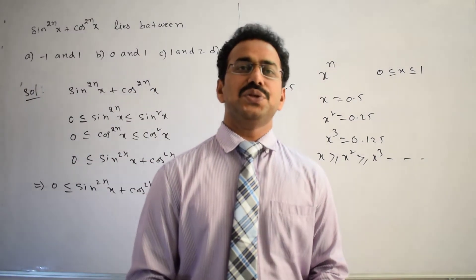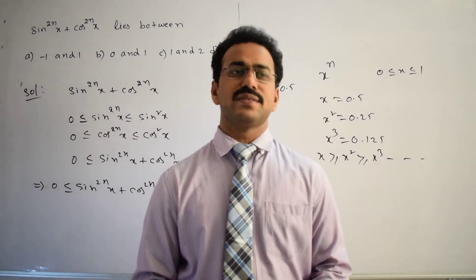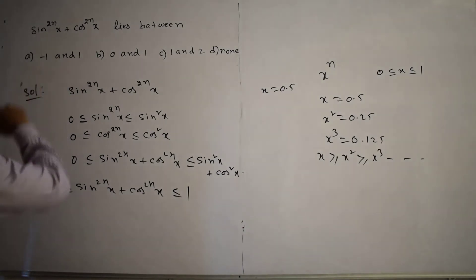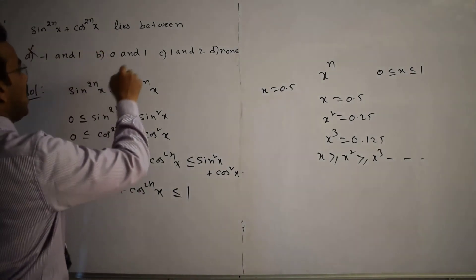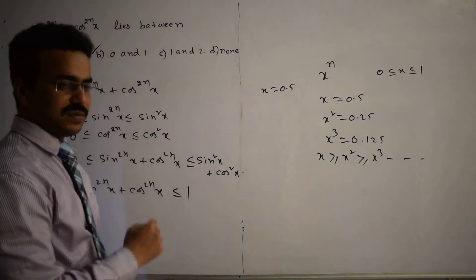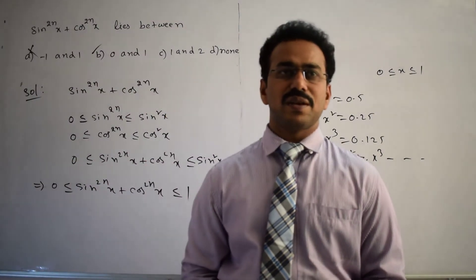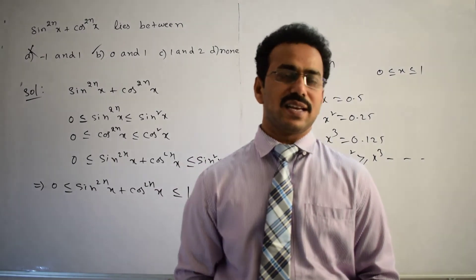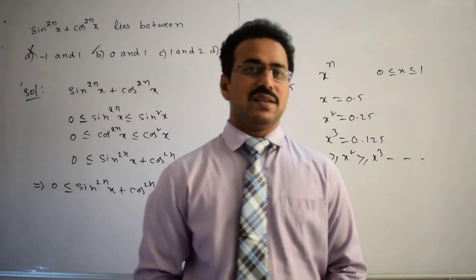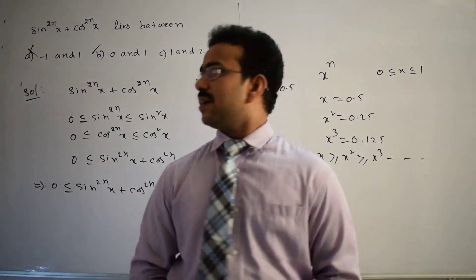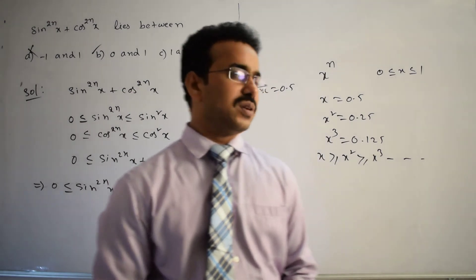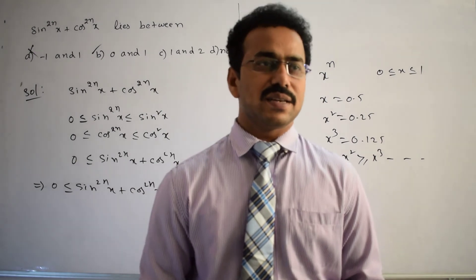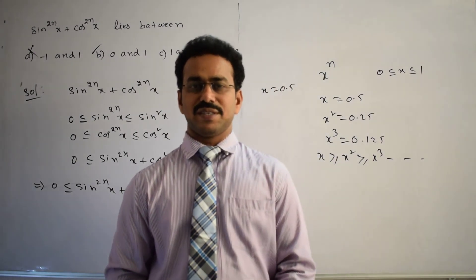So we conclude that sin²ⁿx + cos²ⁿx always lies between 0 and 1. Comparing with the given options: it does not lie between −1 and 1 — that is incorrect. The correct answer is that it lies between 0 and 1. The key steps were: use the range of sin and cos, form two inequalities, add them, and apply the identity sin²x + cos²x = 1. Thanks for watching, all the best!